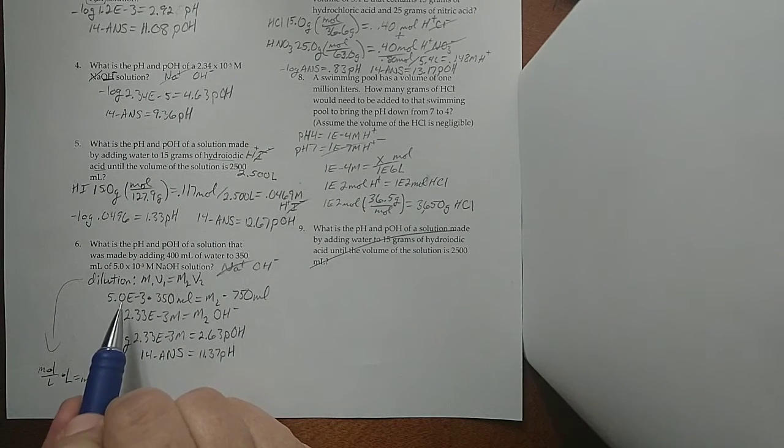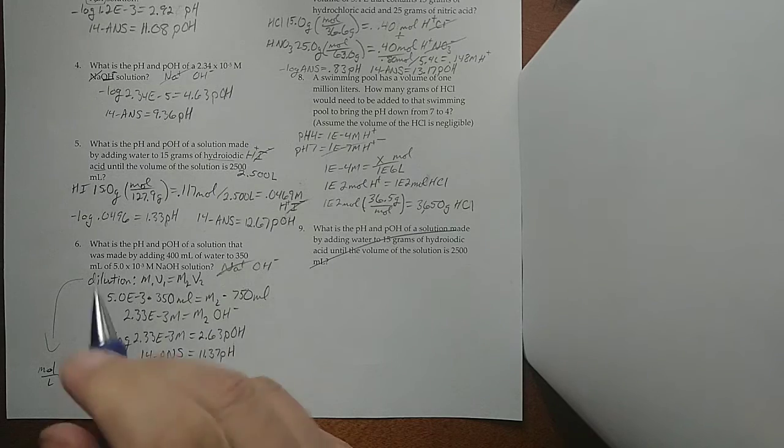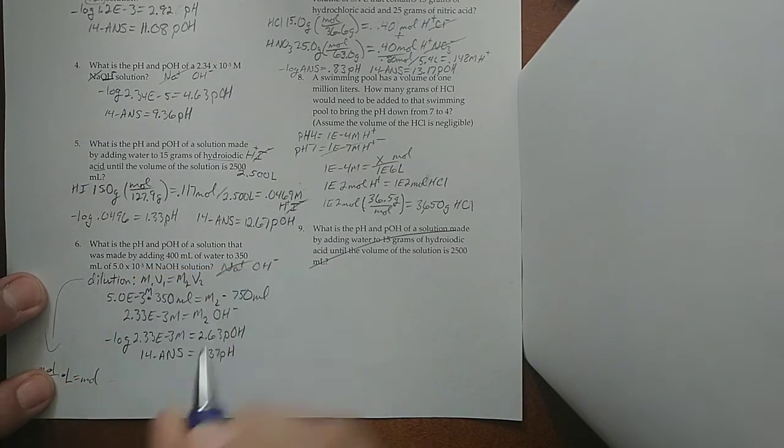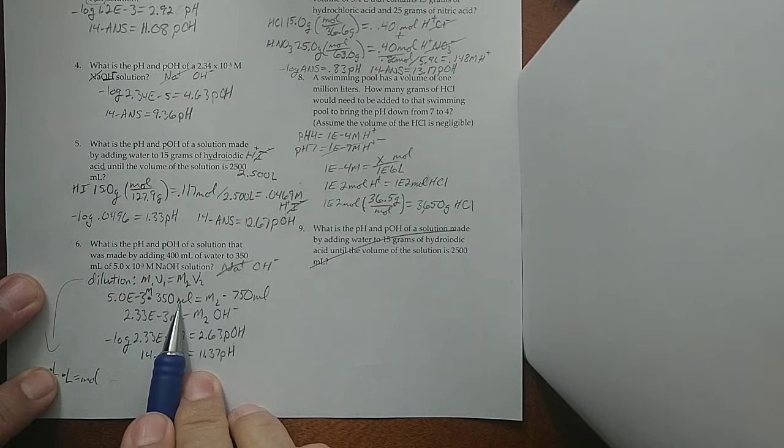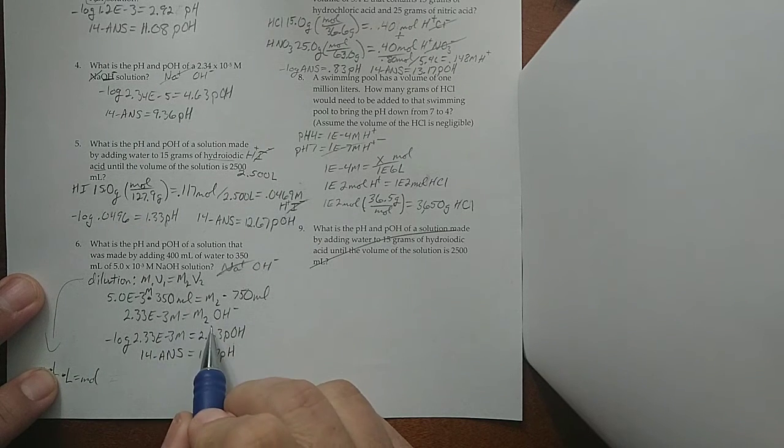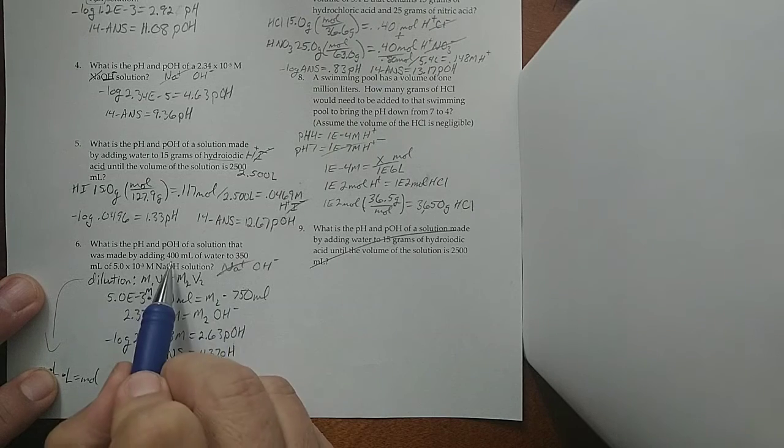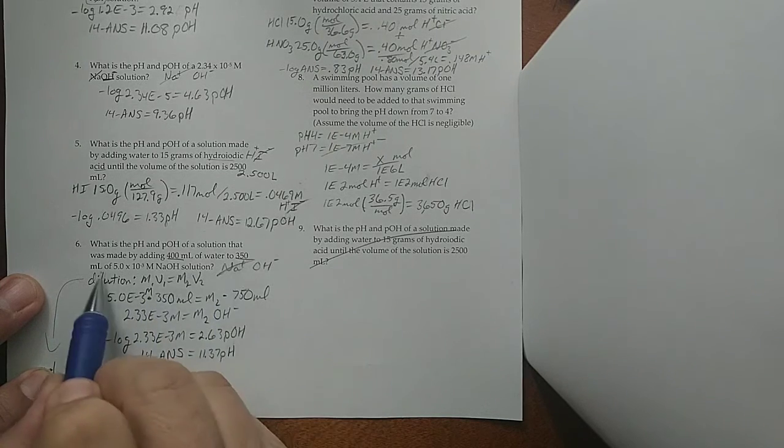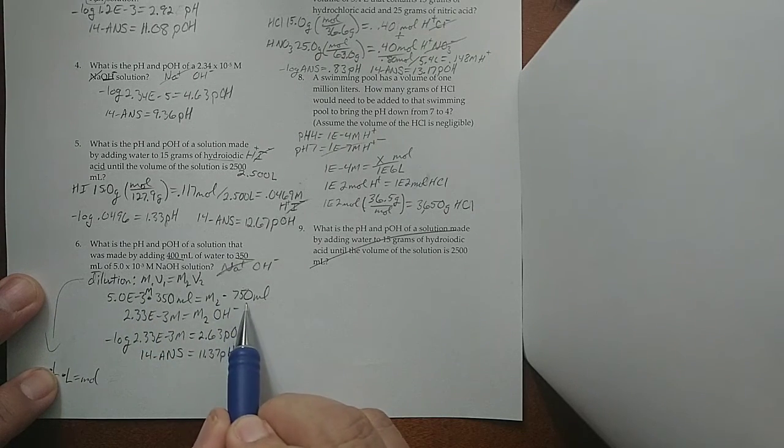So, let's put in our data. This was the beginning molarity, and this is my beginning volume. What's my ending molarity? I don't know. They don't tell me. What's my ending volume? Well, it's this milliliters plus that milliliters, isn't it? So, it's a total of 750.